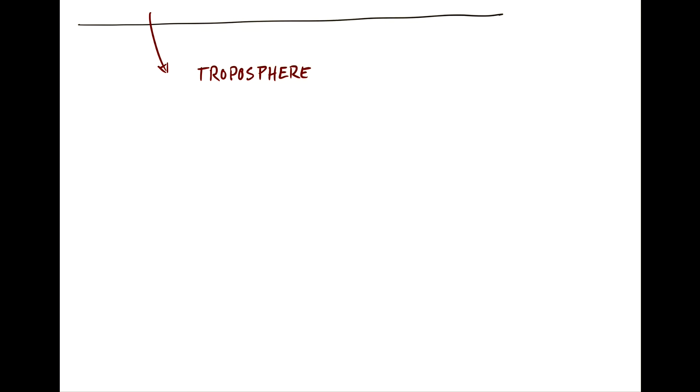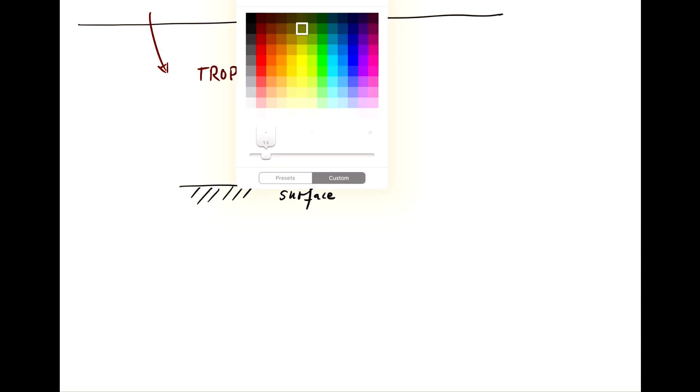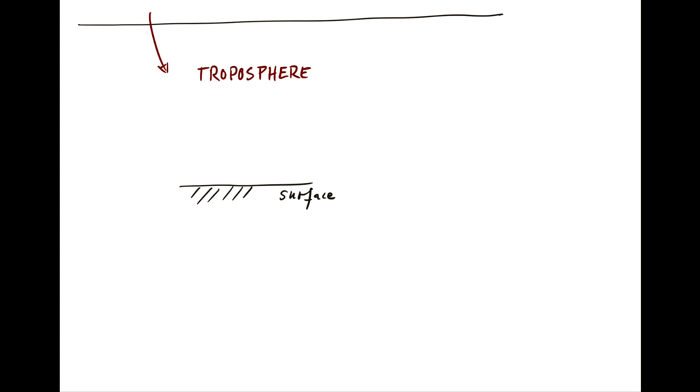For the troposphere, we're near the surface of the Earth and we have solar radiation coming in. Some of it gets reflected straight away, some of it gets absorbed.